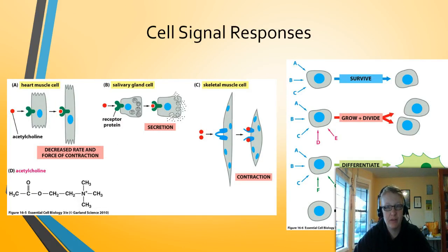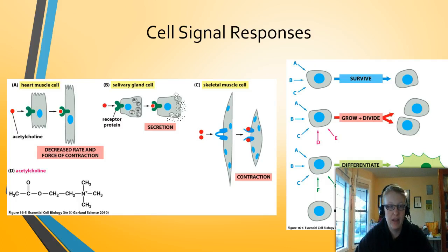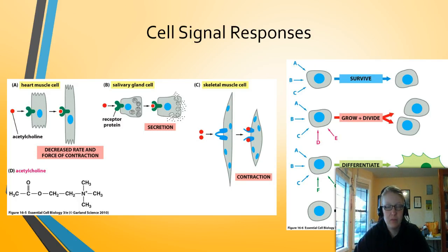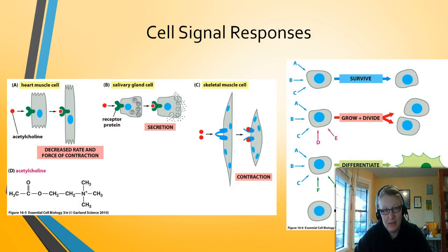Let's talk about how cells respond to different signals. One signal can target any number of different cells and create a different response in each of them. For example, acetylcholine can cause a decreased rate of force and contraction in heart cells, cause secretion in salivary glands, and cause contractions in skeletal muscles. Every cell receives a signal and reacts differently to it. The body must ensure it is sending those signals to the right place, otherwise we get dysregulation.